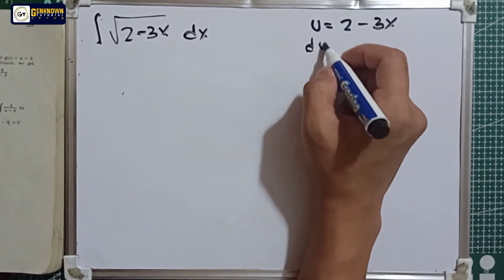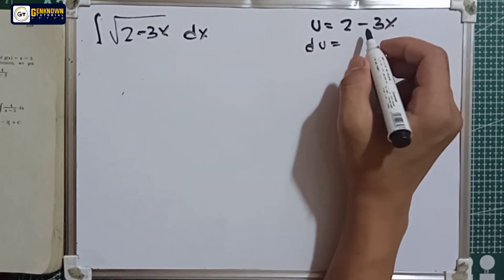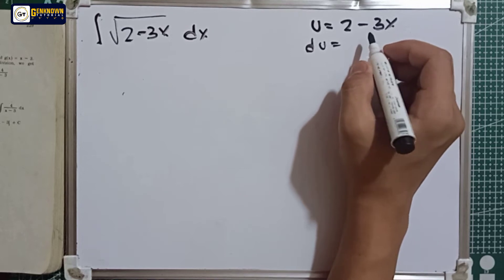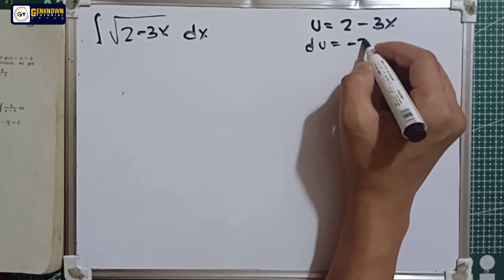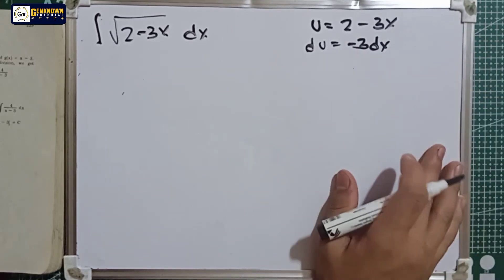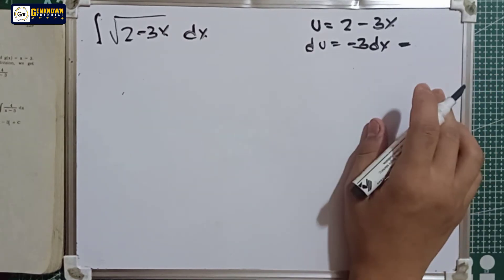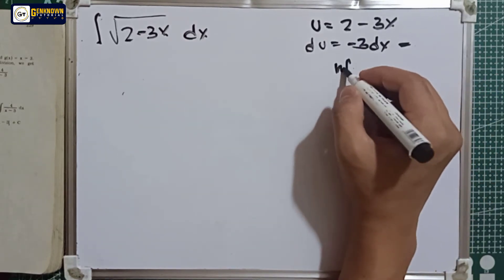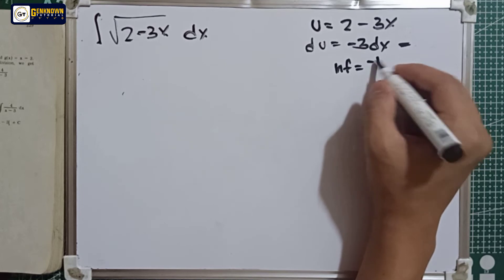So du is equal to zero, the derivative of a constant is zero, negative 3 and dx. Through this, the neutralizing factor is equal to negative 1 over 3.